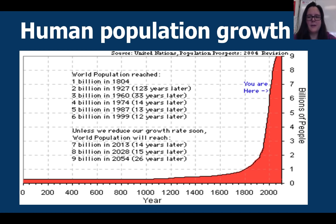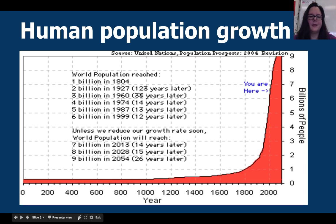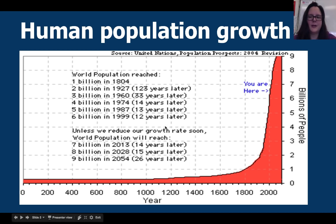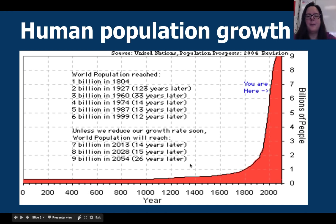Human population growth is an example of exponential growth. World population reached 1 billion people in 1804. It took 123 years to double, then 33 years, 14 years, 13 years, and 12 years to go up each additional billion. Our population is going to reach 7 billion in 2013 — and we're actually there — 8 billion in 2028, and 9 billion in 2054. Our population is growing increasingly exponentially, and this could be a problem because there are going to be limits on our growth.